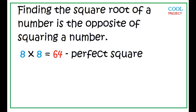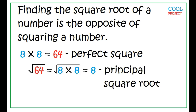Finding the square root of a number is the opposite of squaring a number. 8 times 8 is 64, and 64 is a perfect square. The square root of 64 is 8. 8 is the principal square root, or the positive root.